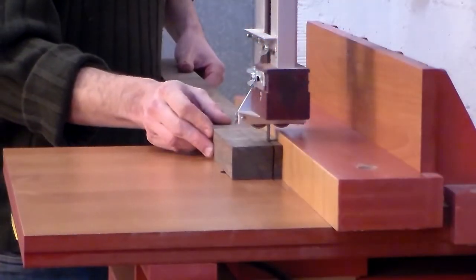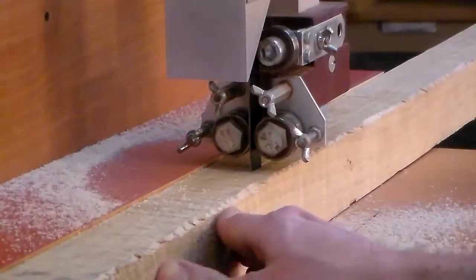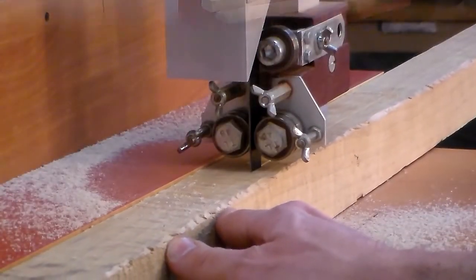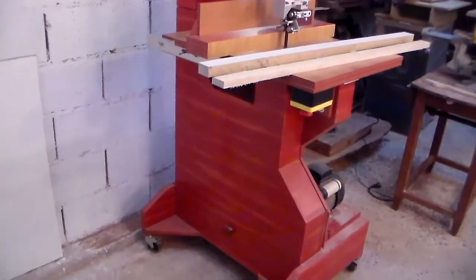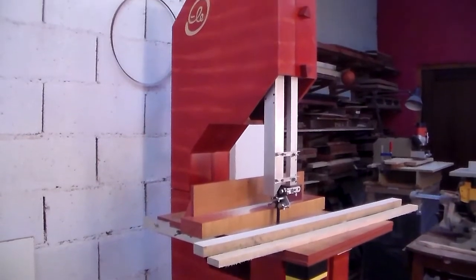First I make the neck, which has three pieces of maple and two pieces of bubinga, so I cut them with the bandsaw. Yes, I am a nerd, so I made my own bandsaw. It has my logo on it, you see?